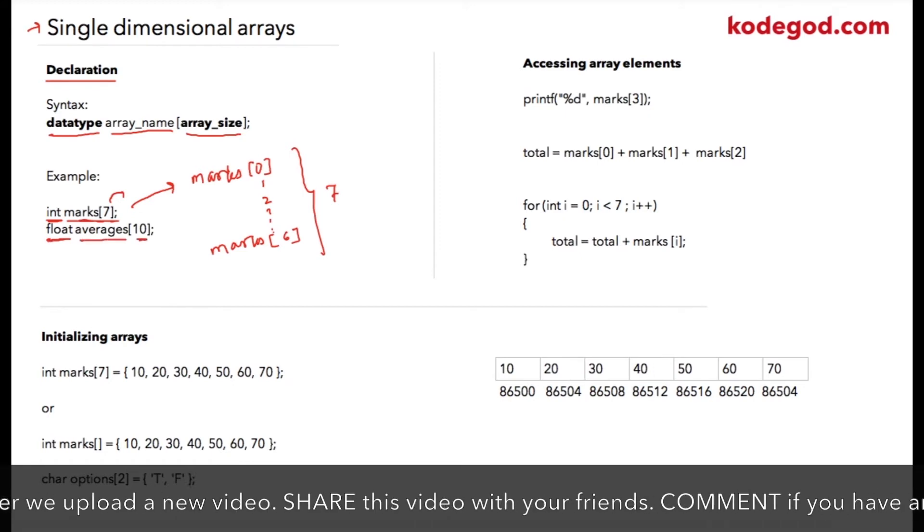So once declaration is done, let us see how we can initialize arrays. Here I am declaring an integer array as marks, setting data size as 7. To initialize an array, after the equal to sign, you can specify all the possible values inside of curly braces.